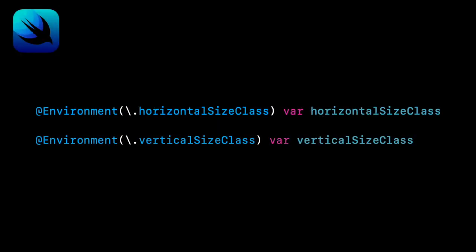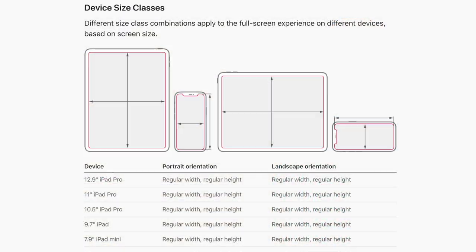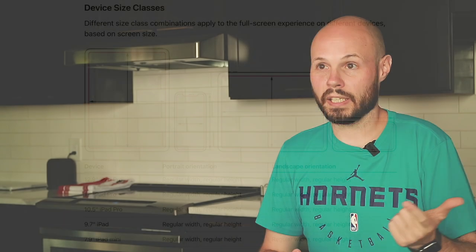The key piece of that whole coding process was SwiftUI's environment variable size class, or horizontal size class and vertical size class. A quick 20-second primer on size classes if you're not familiar: essentially, all iPhones and iPads break down into size classes between regular and compact. So either you're a regular height or a compact height, or a regular width and compact width.